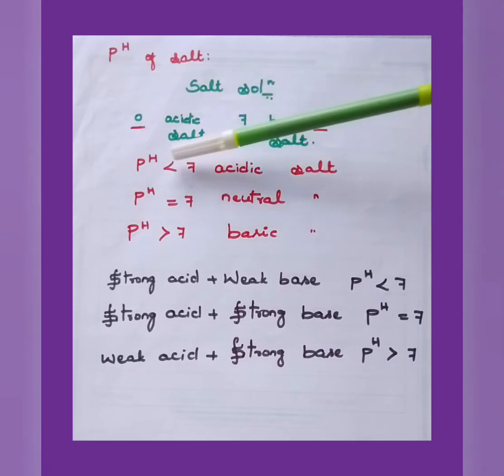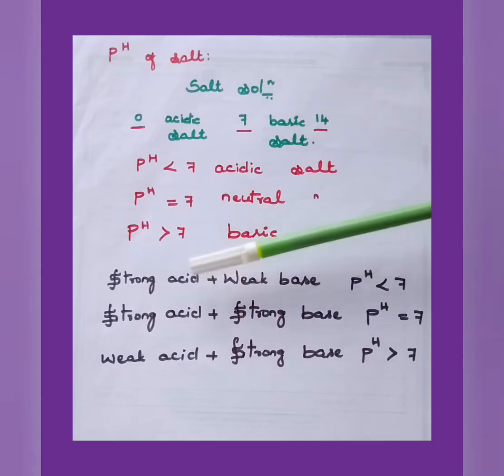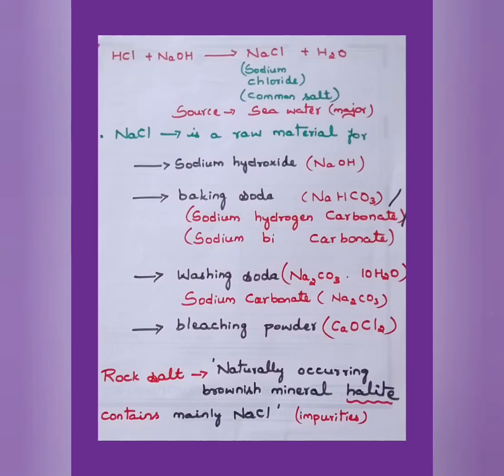pH value is less than 7, the given salt is acidic. pH value equal to 7 is neutral. If pH value is greater than 7, then that is basic salt. How they are obtained? When strong acid reacts with weak base, pH value will be less than 7, so they obtain acidic salt. In case of strong acid and strong base, if a strong acid reacts with strong base, they become neutral, pH value equal to 7. They obtain neutral salt. If weak acid is combined with strong base, the pH value will be greater than 7, hence they obtain basic salts.